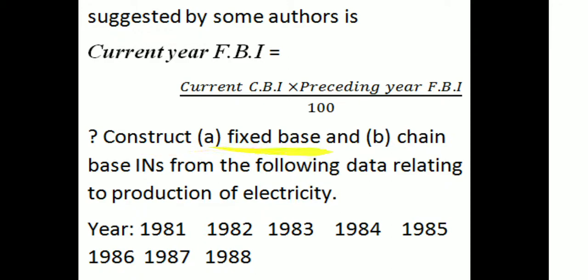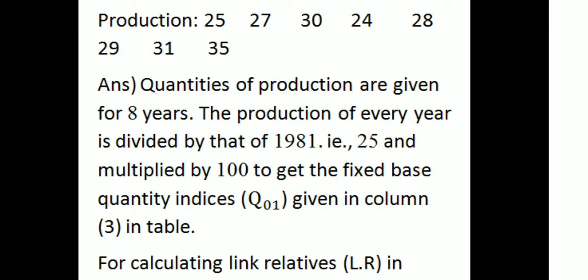Question: Construct (1) Fixed-based and (2) Chain-based Index Numbers for the following data relating to the production of electricity. Years: 1981, 82, 83, 84, 85, 86, 87, 88 with corresponding production values: 25, 27, 30, 24, 28, 29, 31, 35 respectively.